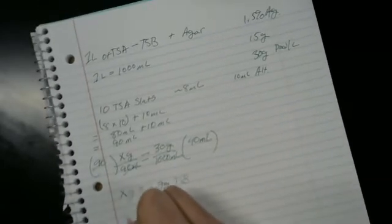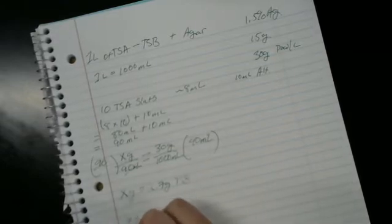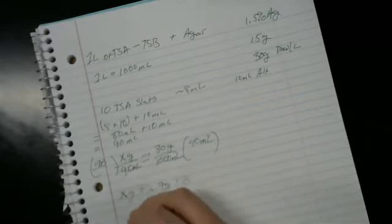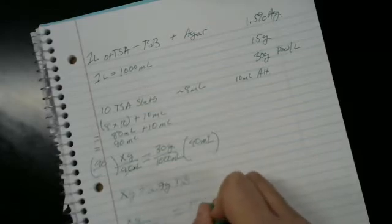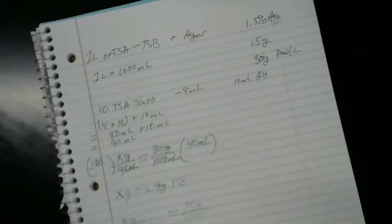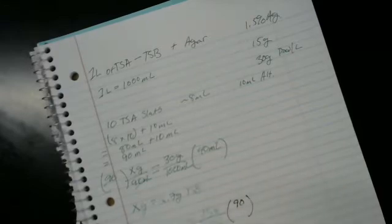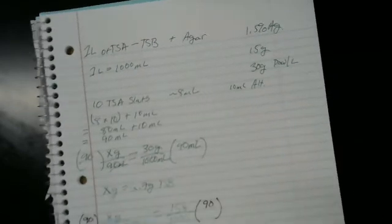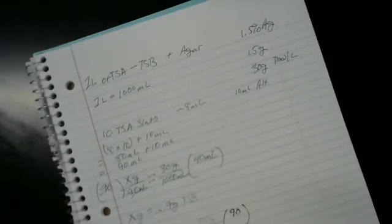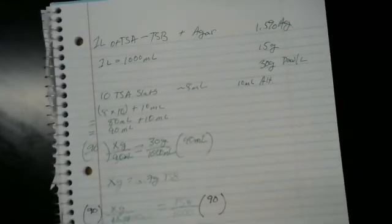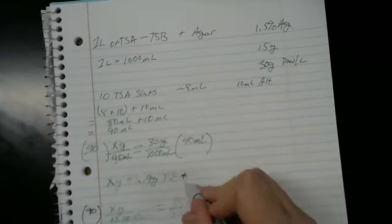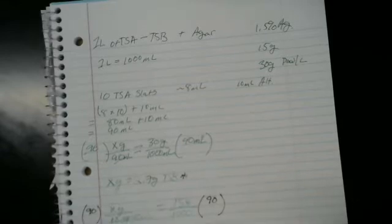Now let's look at the agar. We need x grams of agar over 90 ml, which equals 15 grams per liter. We're going to do the same thing here. So we have x equals 15 divided by 1000, which is .015 times 90. This gives us a total of 1.35 grams of agar. So to make this, we would need this and this. And that is the basis for all the math that we're doing here for media.